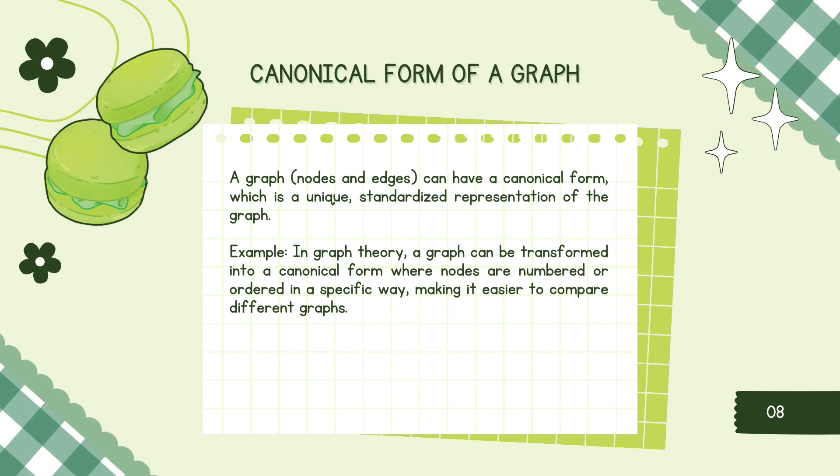Another canonical form is canonical form of a graph. A graph with nodes and edges can have a canonical form, which is a unique standardized representation of the graph. Example: in graph theory, a graph can be transformed into a canonical form where nodes are numbered or ordered in a specific way, making it easier to compare different graphs.